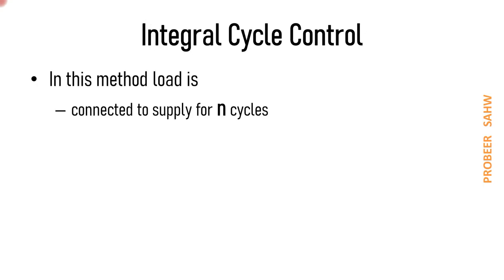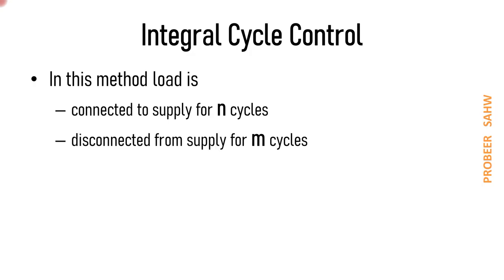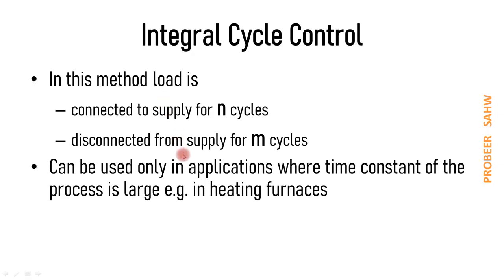In integral cycle control, the load is connected to the supply for N cycles, and then for the next M cycles the load is disconnected from the supply. Disconnecting the load should not appreciably affect the output, provided the application has a large time constant. Therefore, integral cycle control can be used only in applications where the time constant is large.